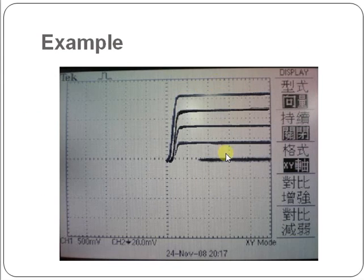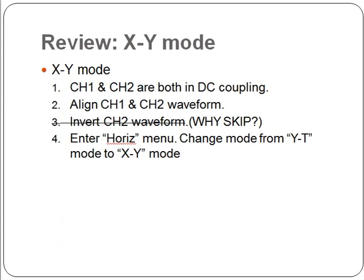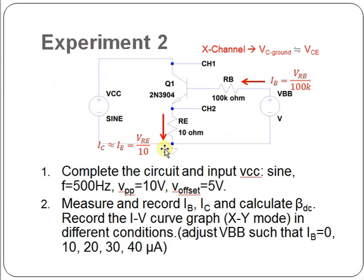This is the result of setting different IB: 0, 10, 20, 30, and 40 micro-ampere. Note the graduation here, and you can convert this graph into the IV relation using this formula.